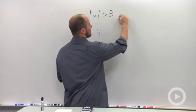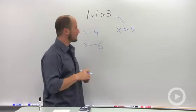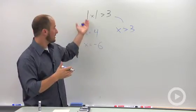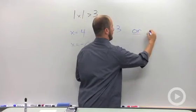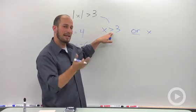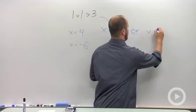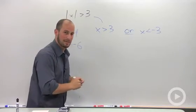This can go to x is greater than 3, obviously because it's just the same thing that's here, or x is—and then you just want to flip the sign and flip the number—less than negative 3.